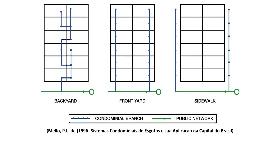This slide shows three different condominial sewer designs. On the left is a backyard design. Here, the small diameter lines are laid in sequence through the backyards of house plots. This design substantially reduces the length of sewer line required.